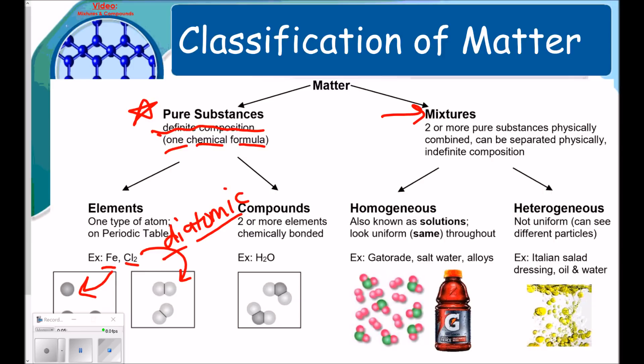Diatomic sounds exactly how it is. Di meaning two, atomic meaning atom. So it's two atoms stuck together. There's seven of these special atoms, and we'll talk more about them as the course proceeds. But chlorine is one of them. You can see in our picture, it's two of the same colors stuck together. It's still defined as just an element.